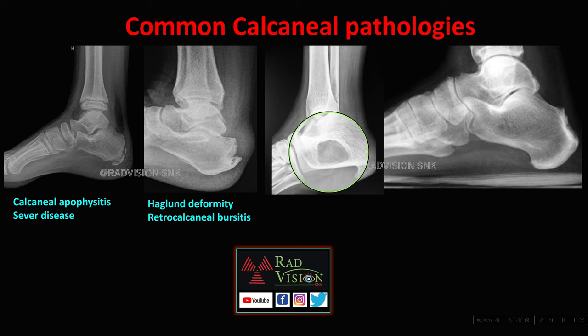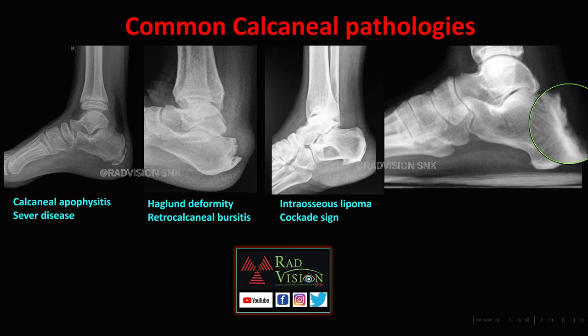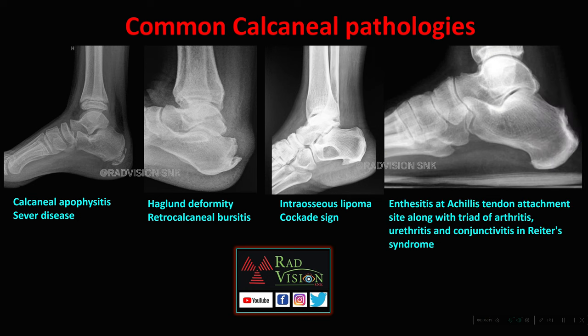A lytic lesion with sclerosis and a small nidus inside the calcaneum is classically seen in intraosseous lipoma — this is the Cockeyed sign. Erosions and irregularities at the level of the Achilles tendon attachment at the calcaneum represent enthesitis at the Achilles tendon attachment site. Along with the triad of arthritis, urethritis, and conjunctivitis, this is Reiter's syndrome — remember: can't climb, can't pee, can't see.